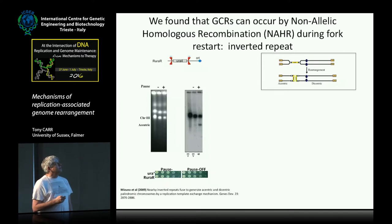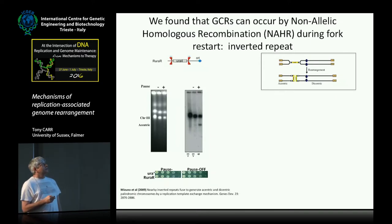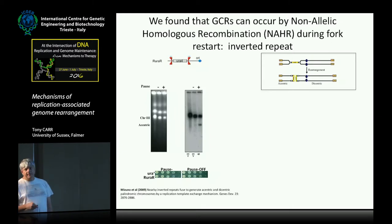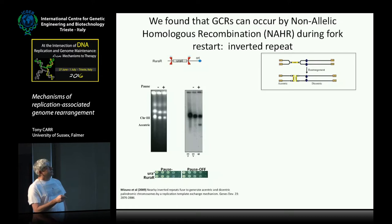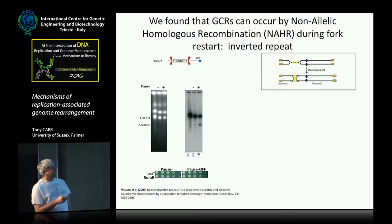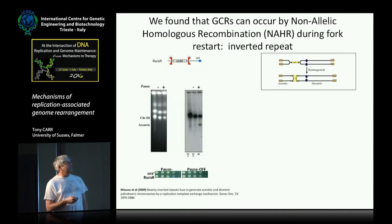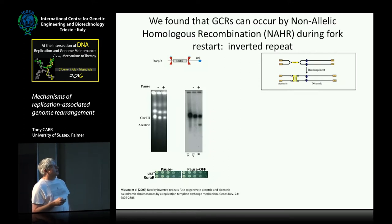One of the first things we did when we set this system up was set up a construct where we had a small inverted repeat with a couple of kilobase spacer in between. There are no origins in here, so replication would be arrested at both sites. There's a strong origin nearby, so this is the first arrest point, and we were interested to see how the cell coped with that — and as it turned out, we required homologous recombination.